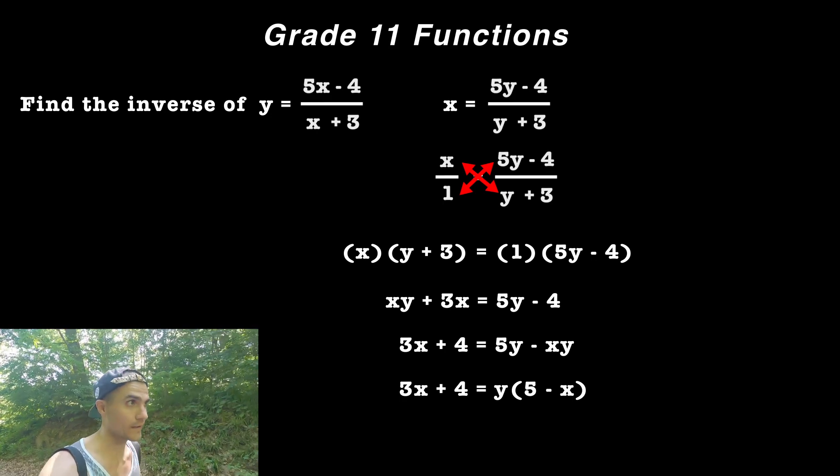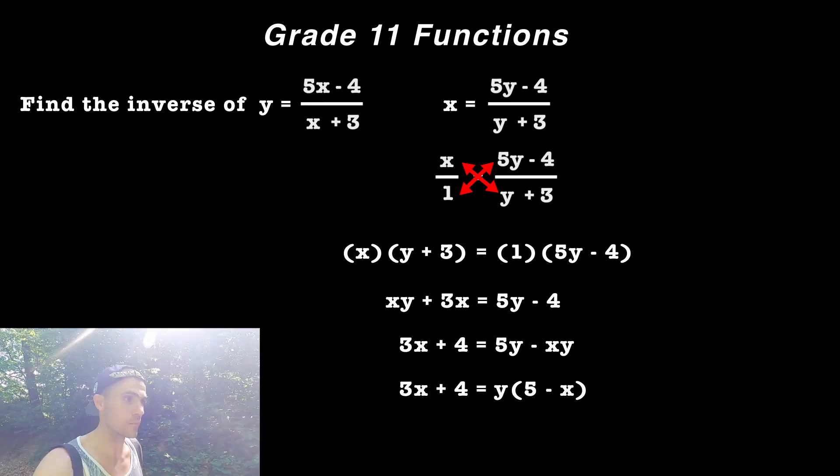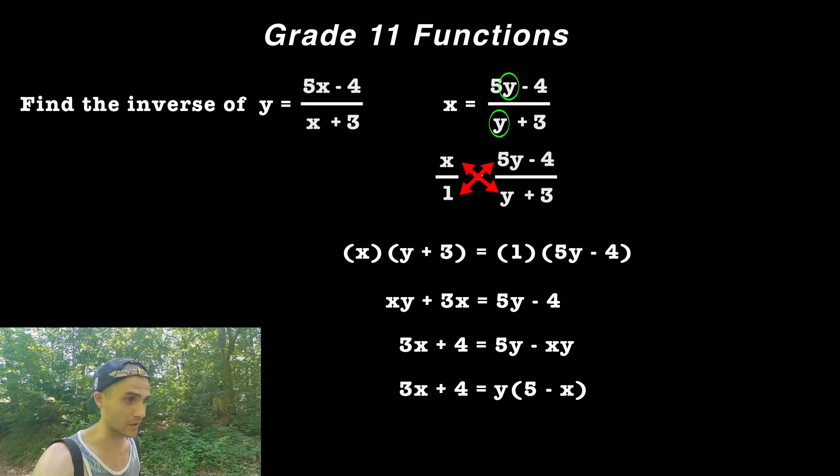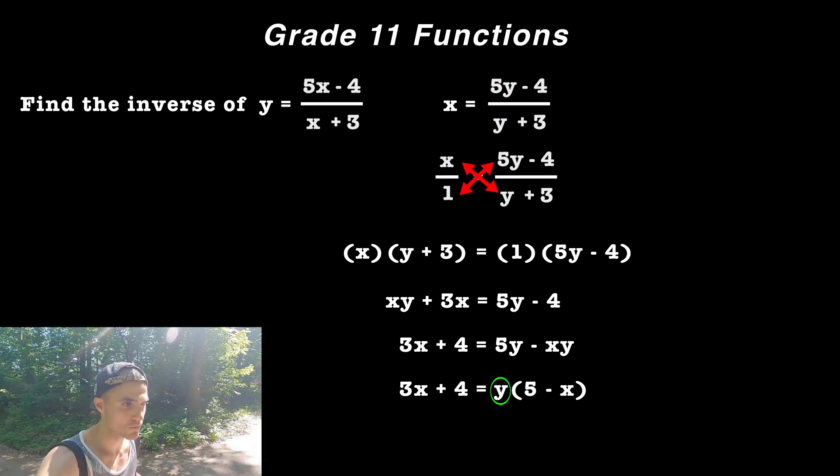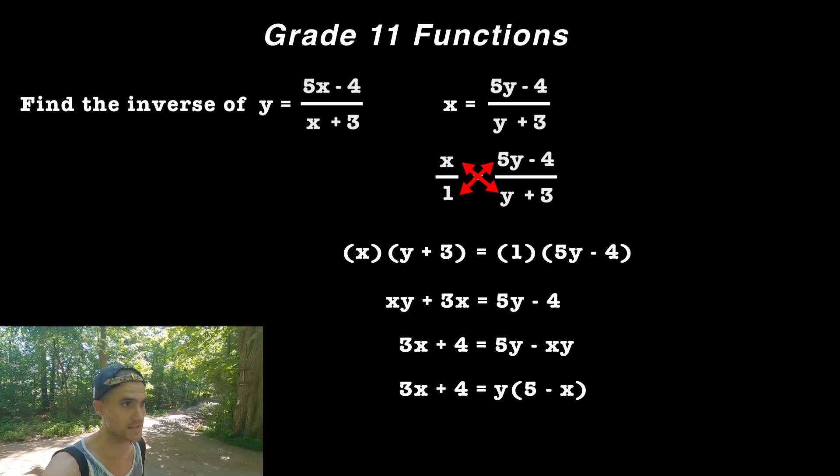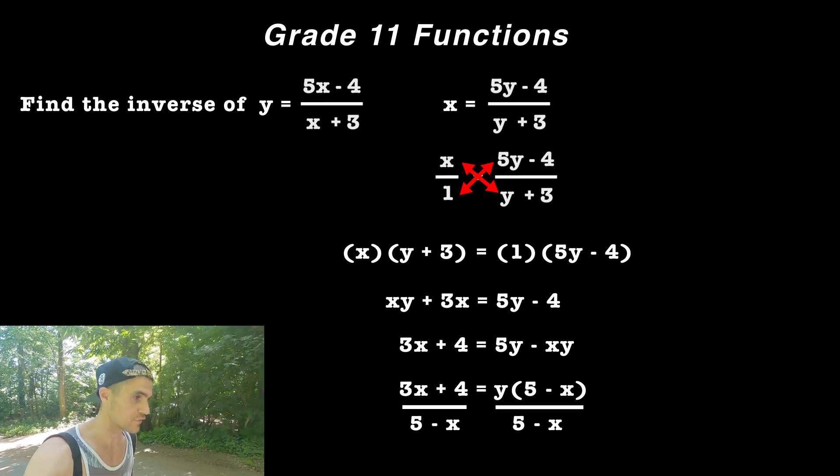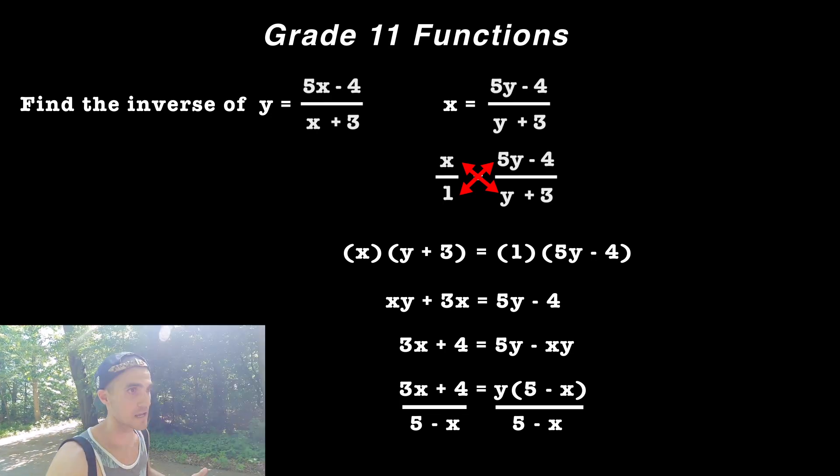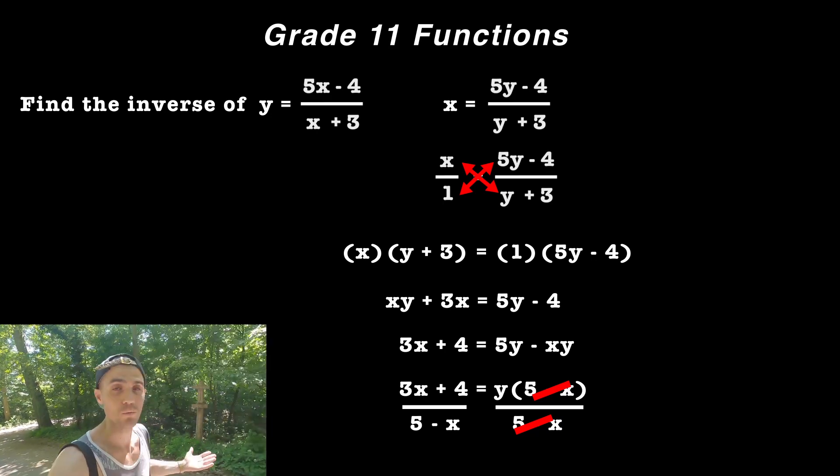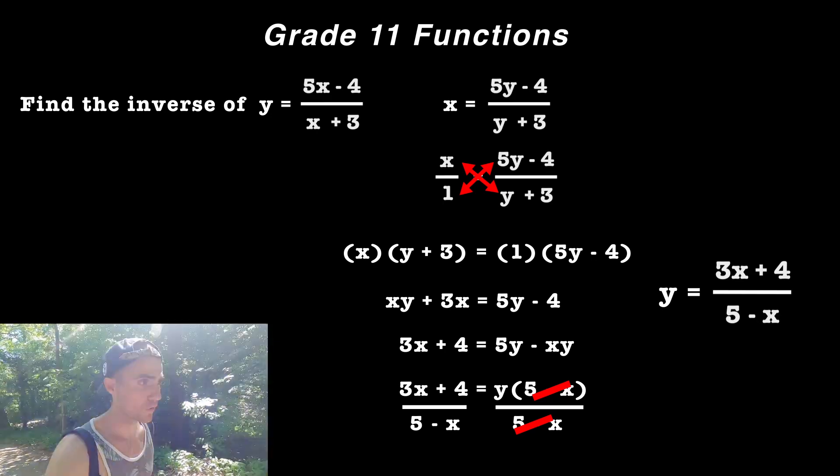What are we left with in the bracket? 5 minus x. And so now notice that we switch this from there being two y values to now there only being one y value. And so now we just literally have to isolate for that y value. So we got to divide both sides by what's attached to that y value, which is that bracket 5 minus x. So we divide both sides, then the 5 minus x would cancel out on the right side.